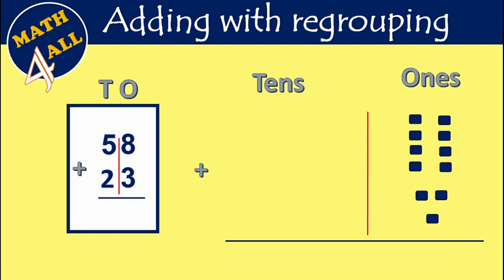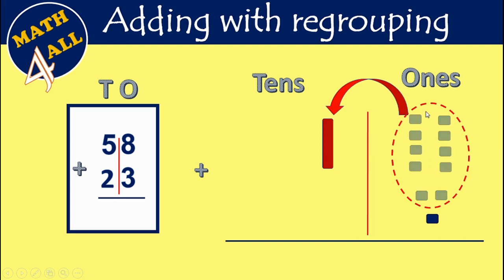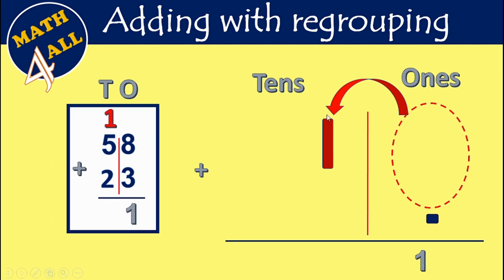I will write just 1 and carry up 1 to the tens place. I have to take 10 ones to the tens place. Now we take this 10 to the tens place and we have just one left. So from 11, I will write 1 in the ones place and carry up 1 in the tens place.